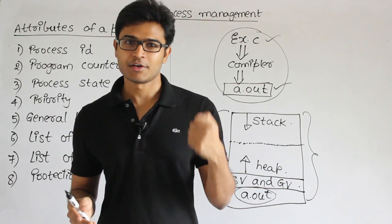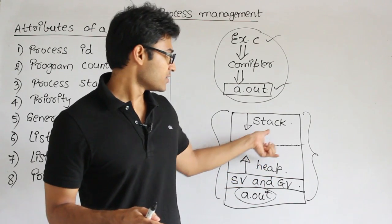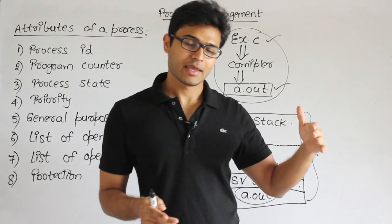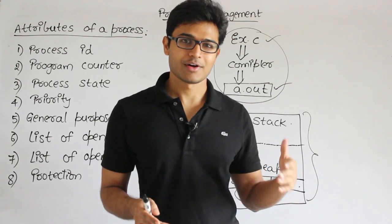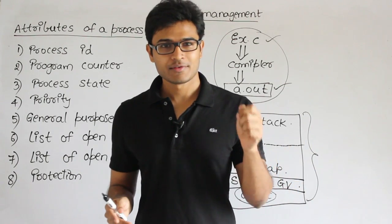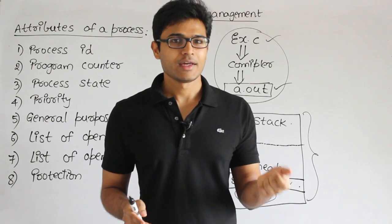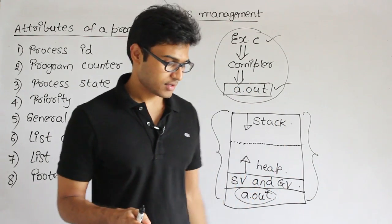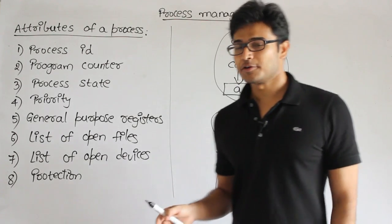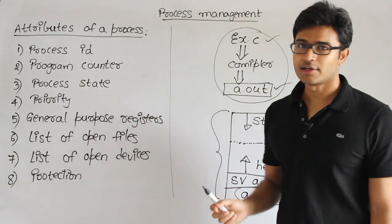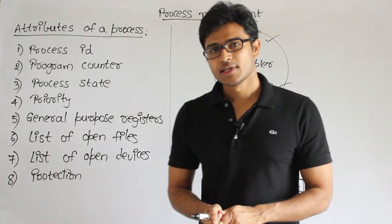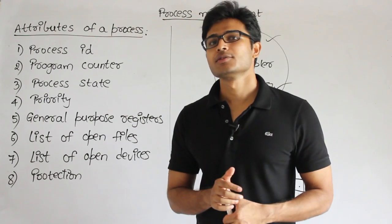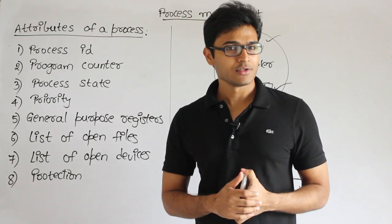Every process will be given an identity card. Whenever any process is born, the operating system is going to give it some ID card. That ID card is going to look like this: it will contain all these attributes. The first attribute is Process ID — every process will be given some unique number, and that is called the Process ID.